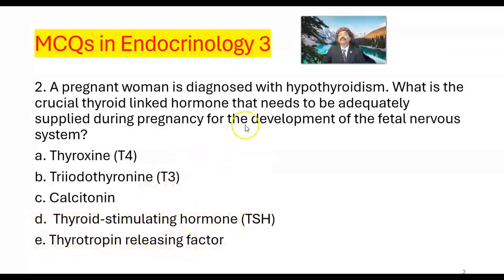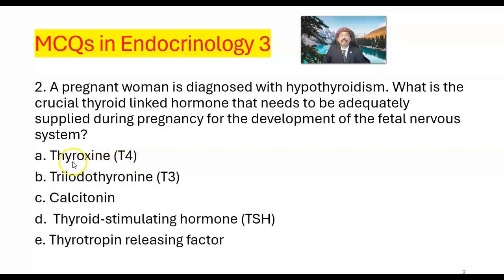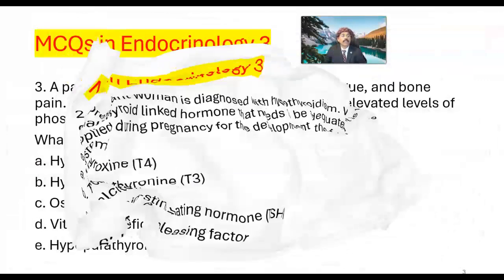Thyroid hormone is essential for the development of the nervous system. Otherwise, we will get a baby with cretinism. So what hormone is essential during pregnancy? The answer should be A — thyroxine (T4). Thyroxine is essential for the development of the fetal nervous system.